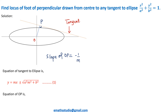The equation of OP can be written as y = (−1/m)x. In the next step, I would like to modify this equation as m = −x/y. Let this be equation number 2. Now to get the coordinates of P, which is the foot of the perpendicular drawn from the center to the tangent, I am solving these two equations in such a way that m will be removed from the equations.